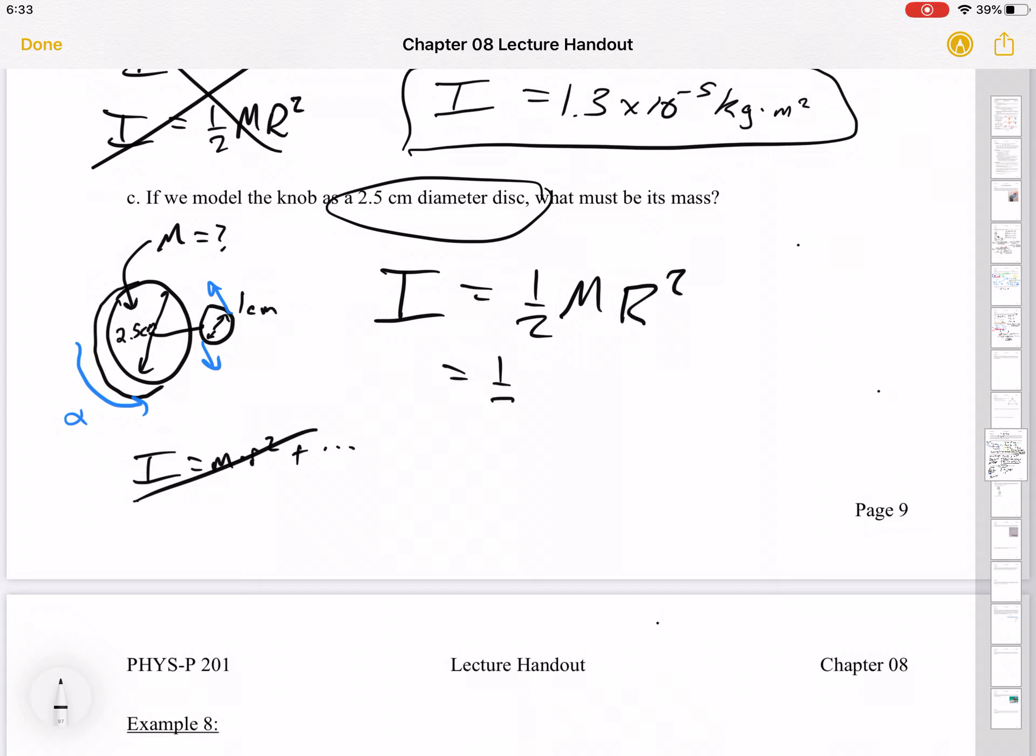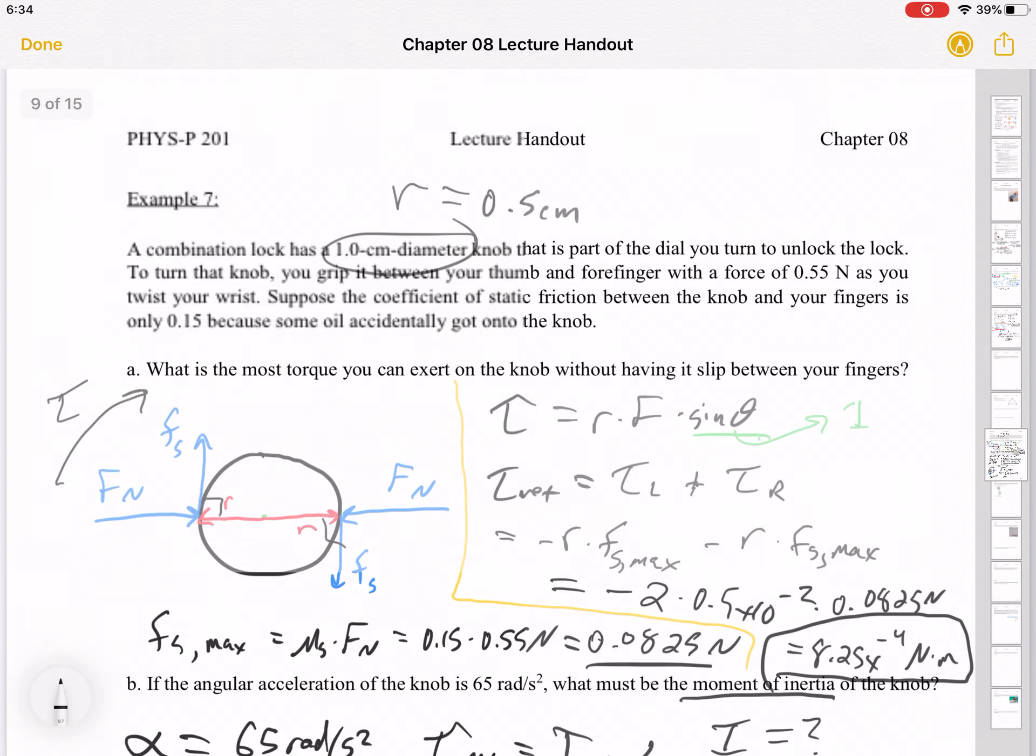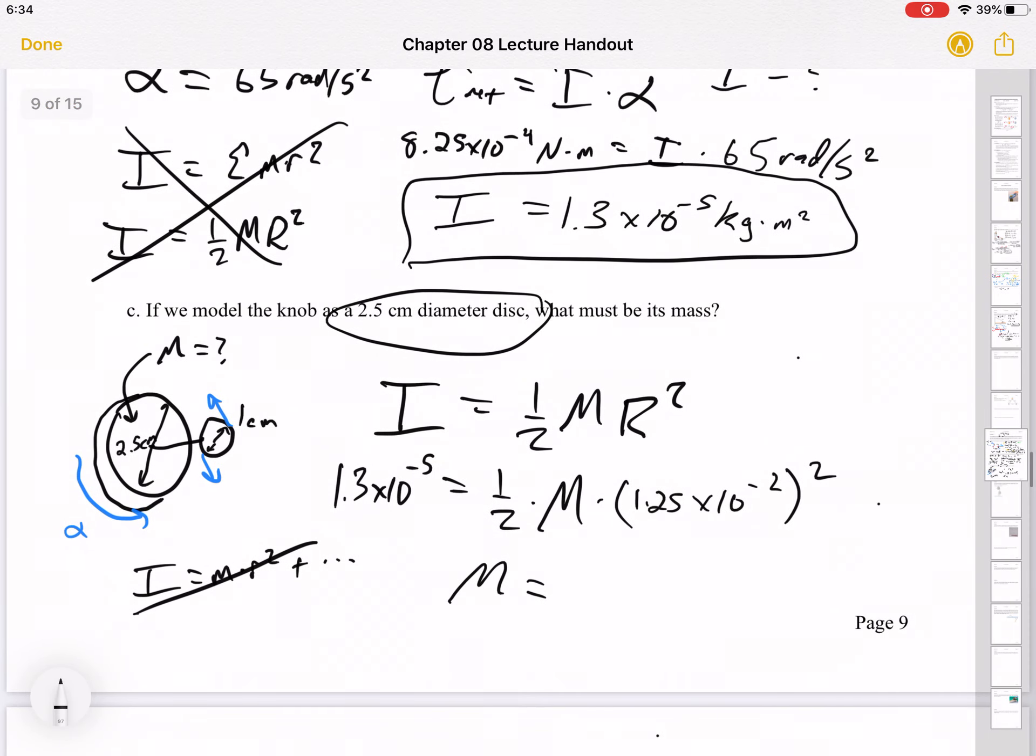Okay, so plugging in, I, we just found, 1.3 times 10 to the minus 5, half m, I don't know, that's what I'm solving for. And the radius is 2.5 divided by 2, right, which is 1.25, and that's in centimeters, so I need to multiply by 10 to the minus 2 squared. If you do that math, you get a mass for this thing of 0.1625 kilograms.